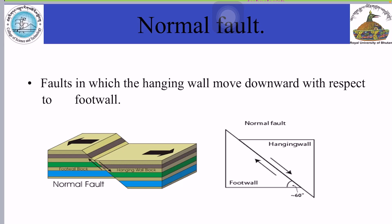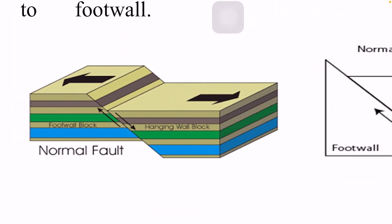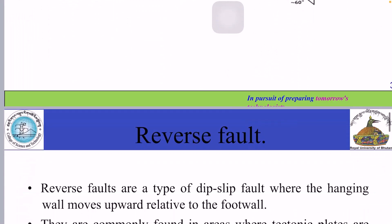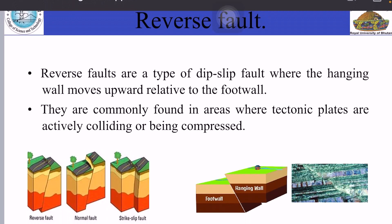Number one: normal fault. A normal fault is a fault in which the hanging wall moves downward with respect to the footwall. Normal faults usually occur along divergent boundaries and they have steep dips of about 60 degrees. As you can see in this diagram, the hanging wall block is moving downward and the footwall block is moving upward — they are moving in totally opposite directions. This is what a normal fault is.